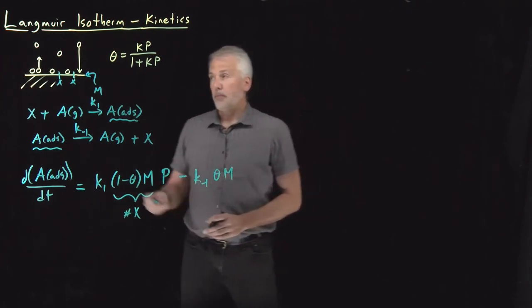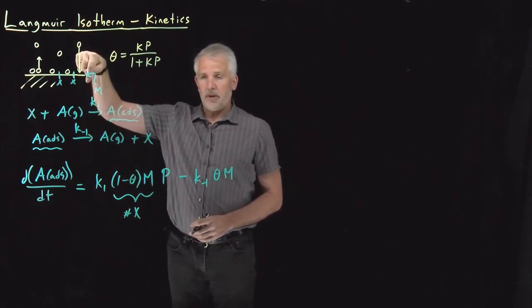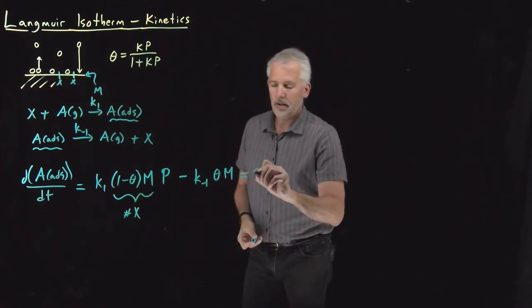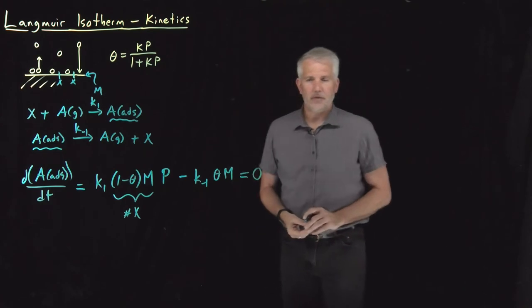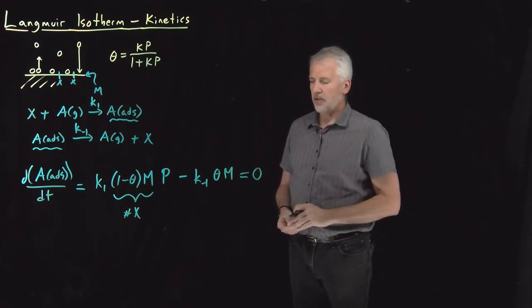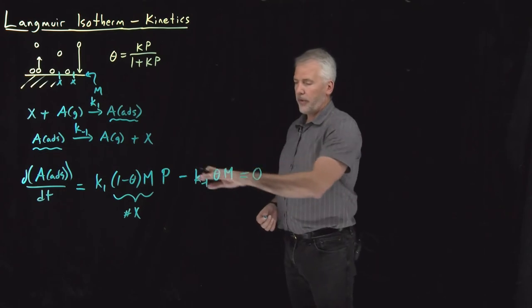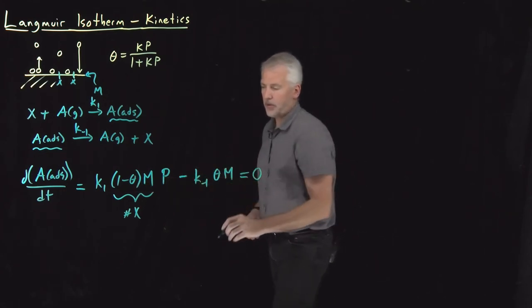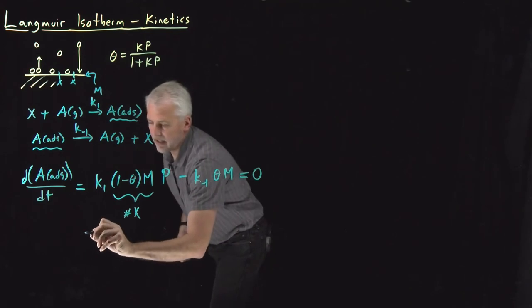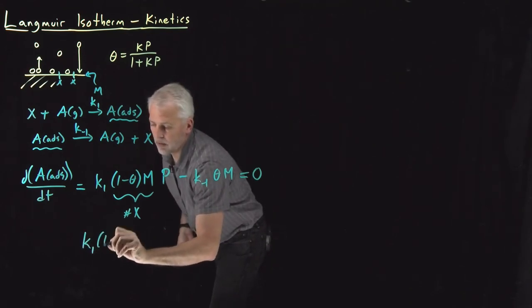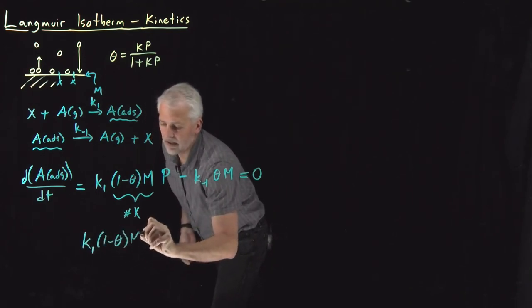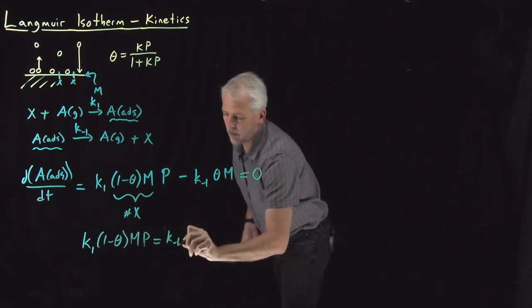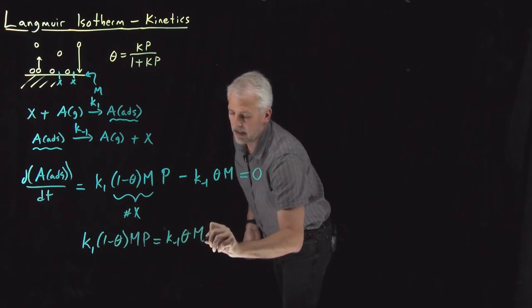If I reach equilibrium, the rate of change will be zero. This is now what's going to allow us to rearrange this equation and solve for theta. If this term minus this term is equal to zero, I can say the first term, k1 times (1 minus theta) times m times P, must be equal to the second term, k minus 1 times theta times m.